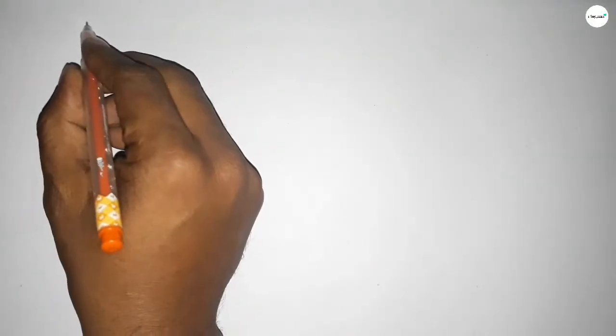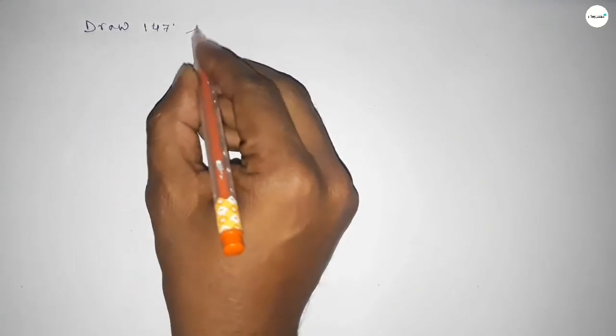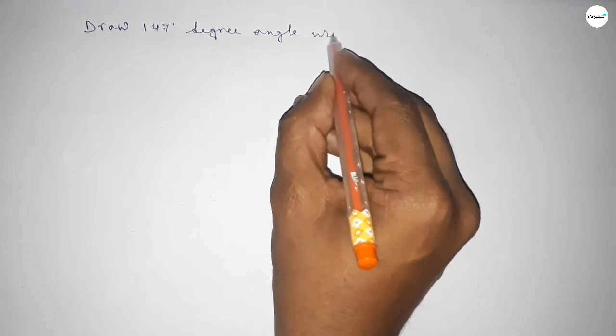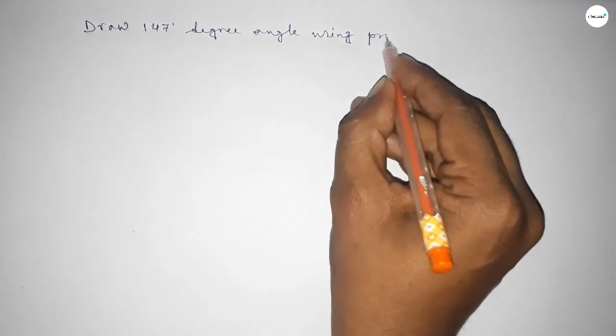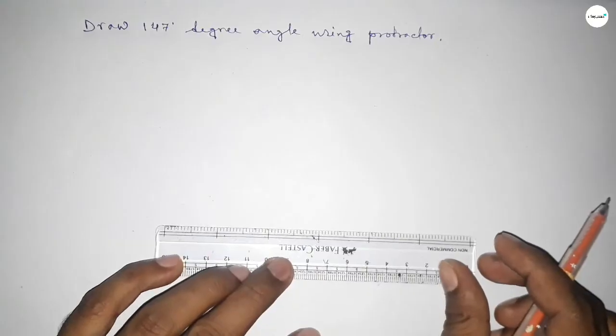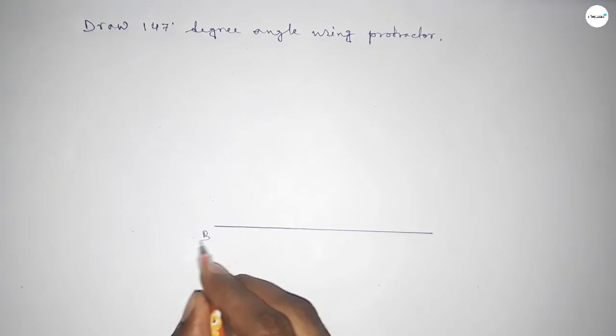Hi everyone, welcome to SI share classes. Today in this video we have to draw a 147-degree angle by using a protractor. So let's start the video. First of all, we have to draw here a straight line, next taking here B point and here C point.